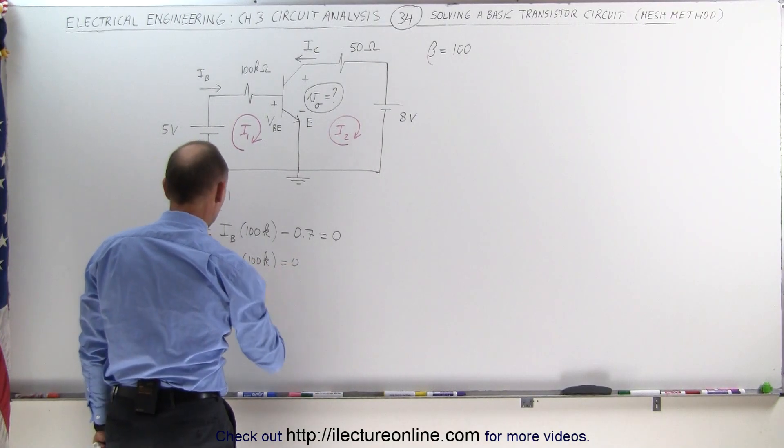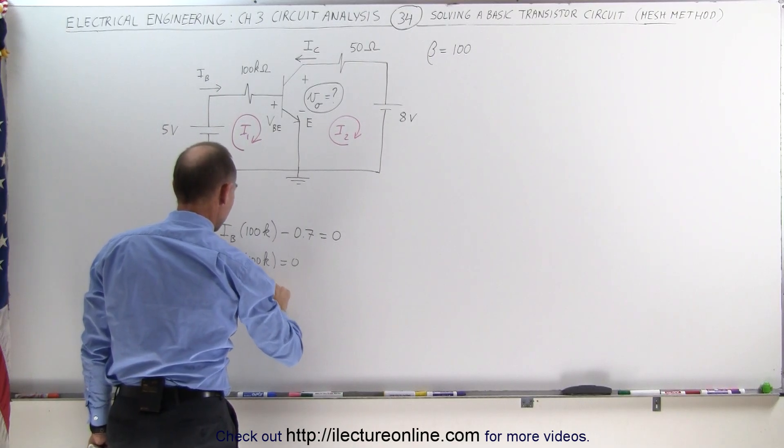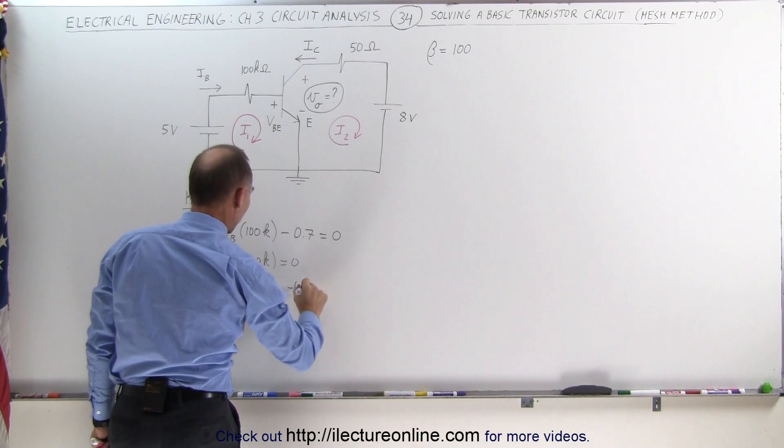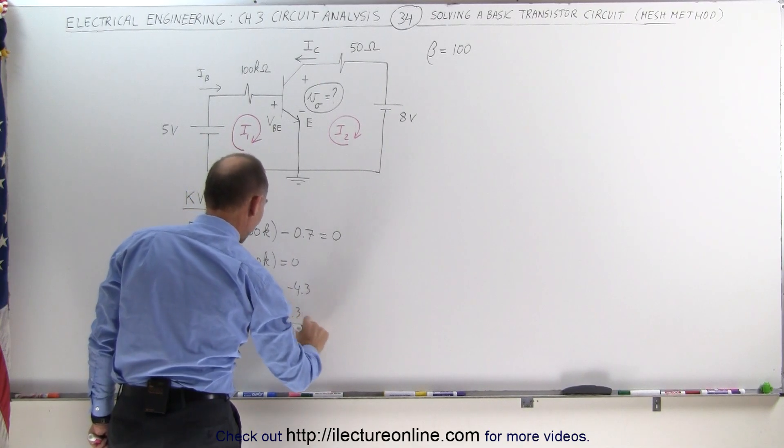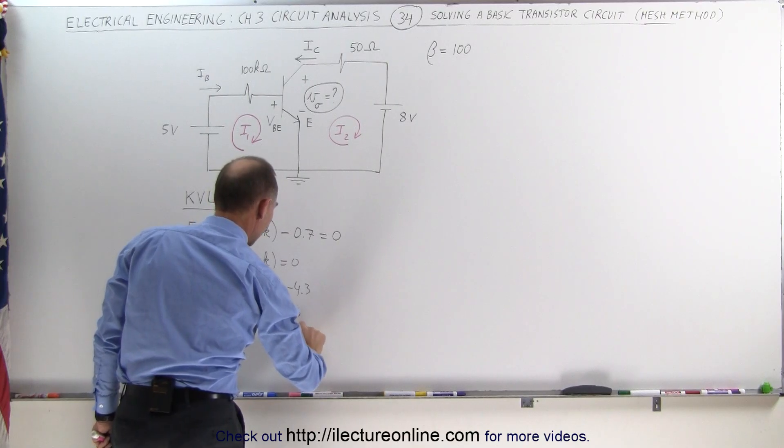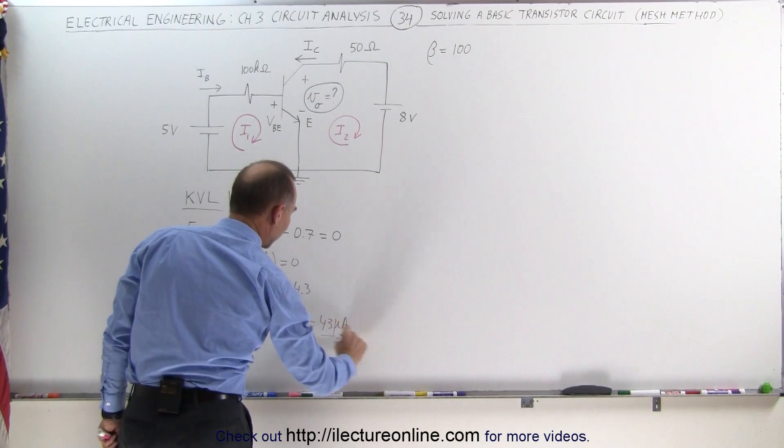That means that when we move that across, minus I sub B times 100k is equal to minus 4.3. That means that I sub B is equal to 4.3 divided by 100k, which is equal to 43 microamps. That's the base current.